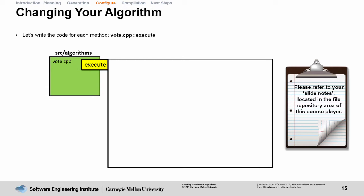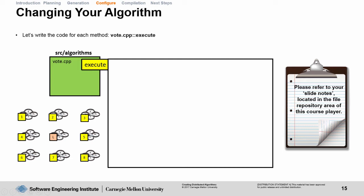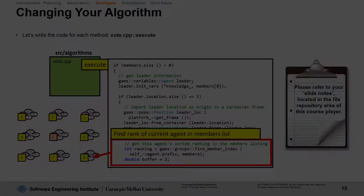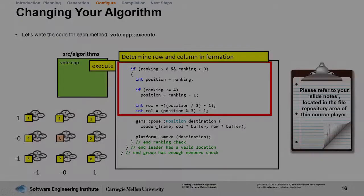Next, we're going to implement the execute method. In the execute method, we're going to perform the actual movements that put us around the leader. First things first, we find out where the leader is located. Then we figure out what our rank is in the members listing.